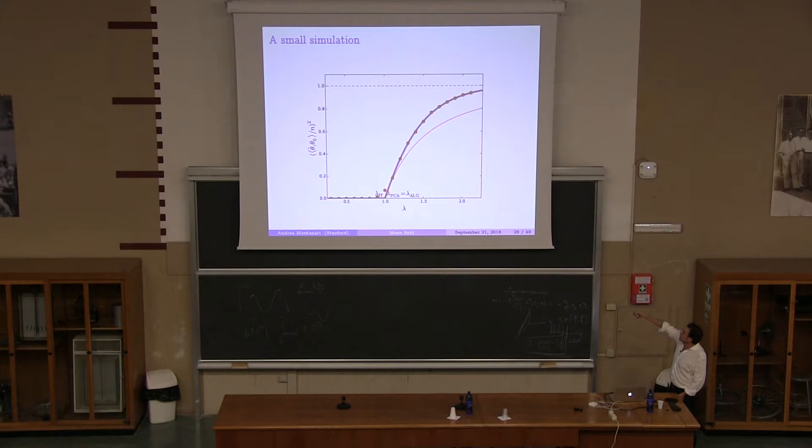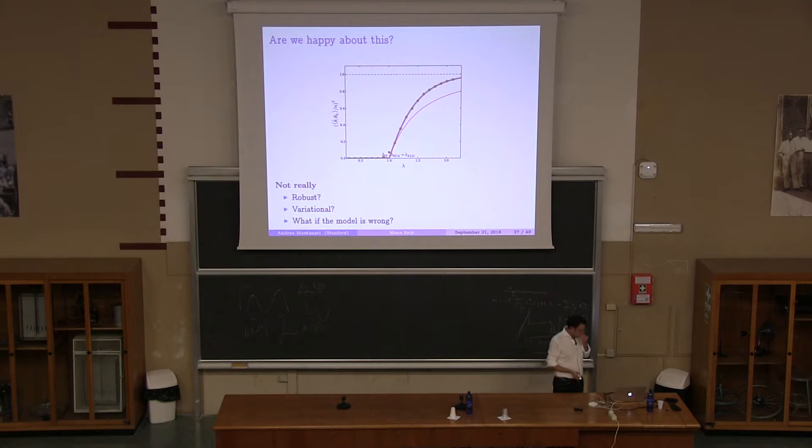So recently, we generalized it to allow for this spectral initialization. And the spectral initialization is kind of needed because zero is a fixed point of this algorithm. Okay, so this is how it works in a small simulation. This is an increased lambda. This is the scalar product. The lambda equals 1. There is a phase transition. And, you know, this is the prediction, the replica, this replica symmetric prediction. And this is what principal component analysis gives you. And this dot is what this algorithm, two-stages algorithm gives you.